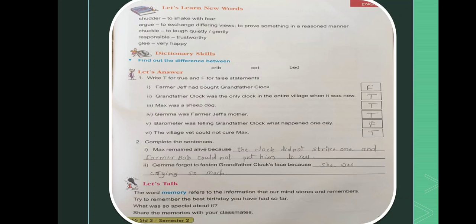Write true or false statements. Farmer Jeff had bought grandfather clock. False. Grandfather clock was the only clock in the entire village and it was new. True. Max was a sheepdog. True.